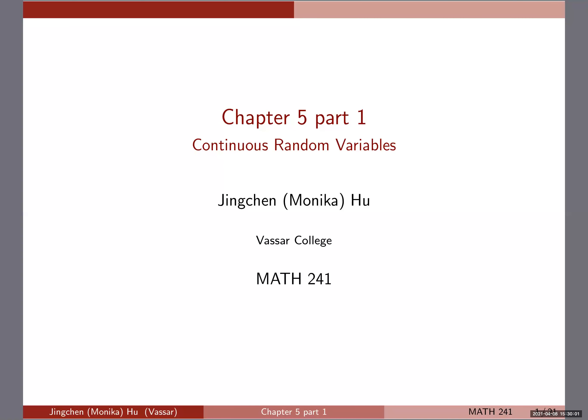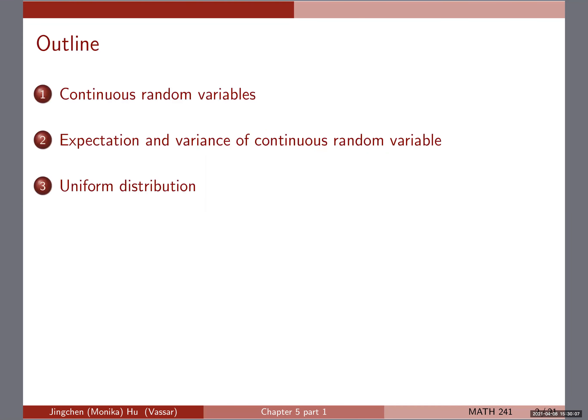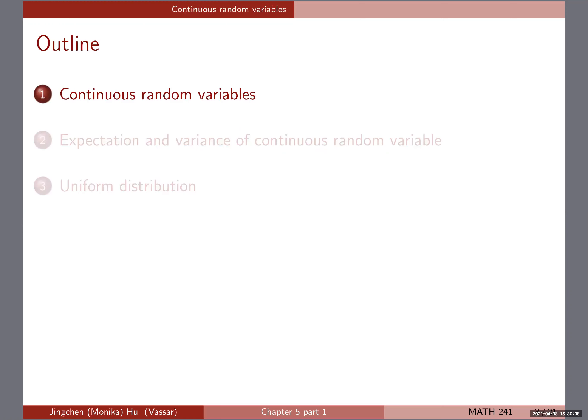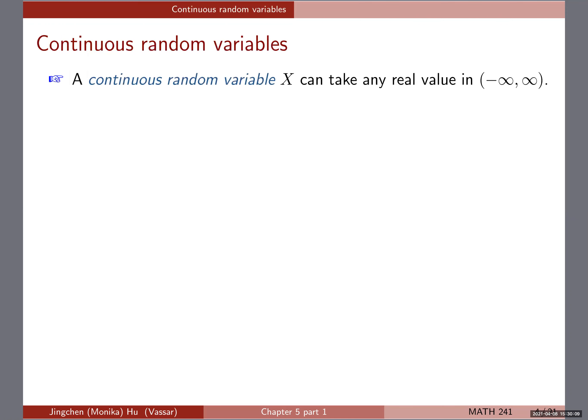Welcome to chapter five. We're going to have two parts. The first part will be talking about certain definitions. Chapter five is about continuous random variables and we're going to start with defining that.